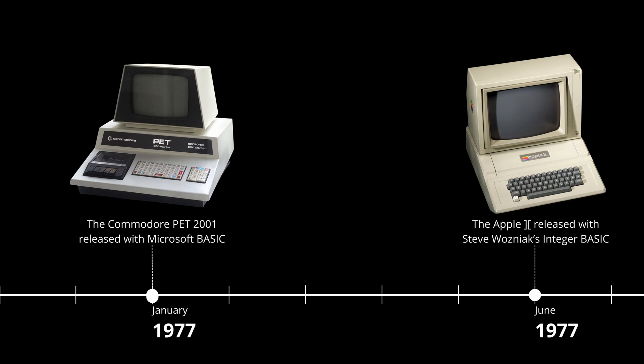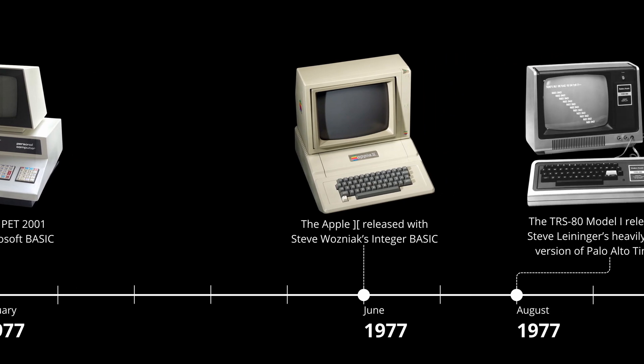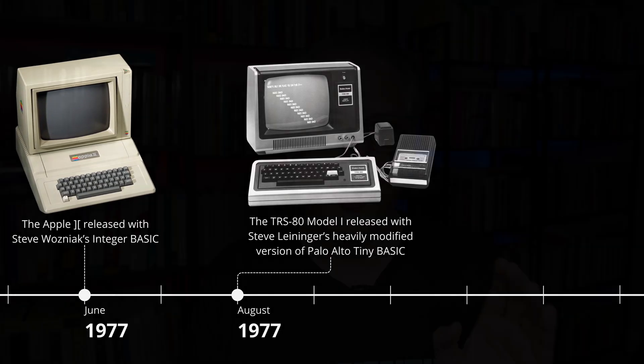This is the 1977 Trinity: the Commodore PET, the Apple II, and the TRS-80 Model 1. Each of those computers was an all-in-one, fully-assembled unit, with a built-in keyboard, a screen or an easy connection to one, storage to load and save programs — which in that day was a cassette tape — and, crucially, the BASIC programming language built right in. No more complex assembly language or loading from paper tape for half an hour. And interestingly, each initially launched with a different flavor of BASIC, though their roots all trace back to that 1975 spark.